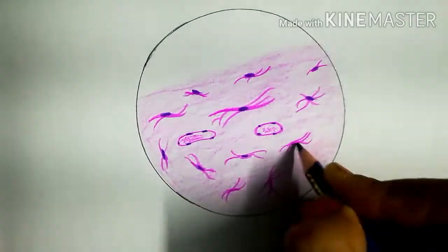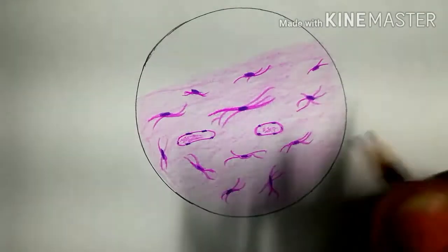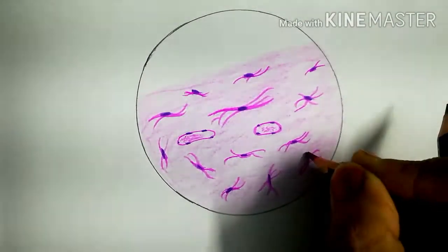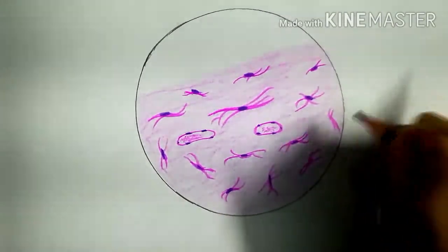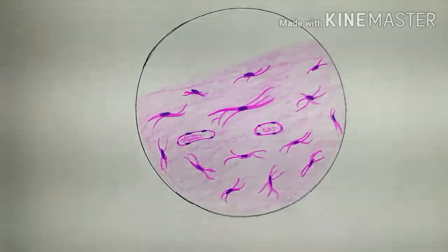Here. So this type of cells are present in the mesenchymal tissue. Okay. Now we will label it.